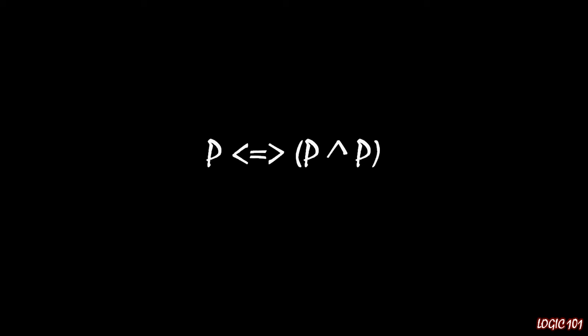So, if P and itself is true, then it must be the case that just P by itself is true, and if P by itself is true, it must be true that both P and itself are true. Pretty straightforward there.